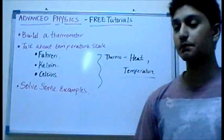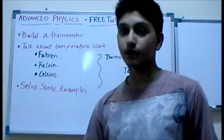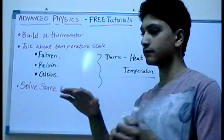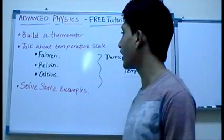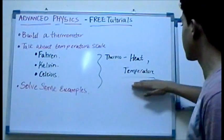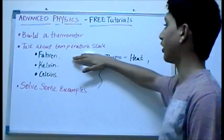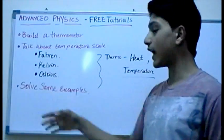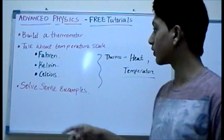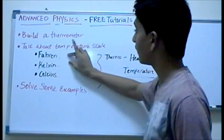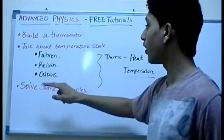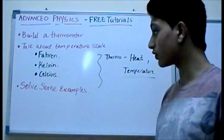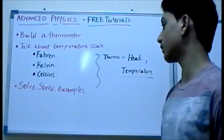Let me give you a preview of what we'll cover in this section: we'll start by building a thermometer, then we'll talk about the zeroth law of thermodynamics, and we'll discuss temperature scales. Since thermo is related to temperature, there are three types of temperature scales — Fahrenheit, Kelvin, and Celsius. I'll give you a conversion factor so you can convert a temperature in Fahrenheit into Kelvin or Celsius. And we'll solve some pretty interesting examples.